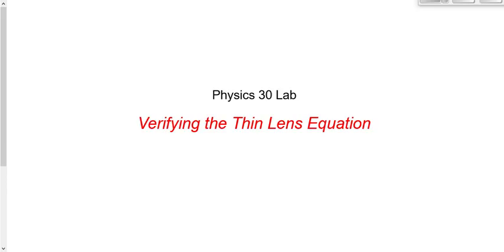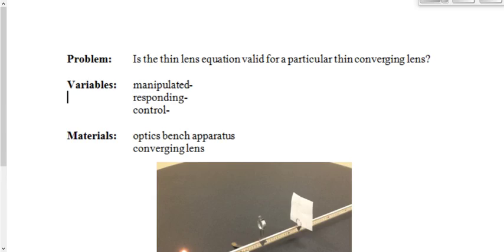In today's activity, we're going to attempt to verify the thin lens equation. You know that equation: 1 over F is equal to 1 over DO plus 1 over DI. The problem always varies in the form of a question: is the thin lens equation valid for a particular converging lens?